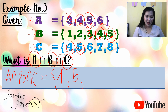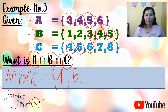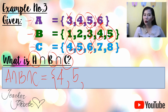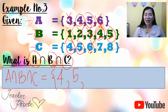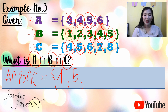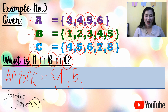Check 1: no match in A, so it is not included. Check 2: no match in A, not included. Check 7: no match in A or B, not included. Check 8: no match in A or B, not included. Therefore, your answer would be {4, 5} only.